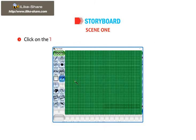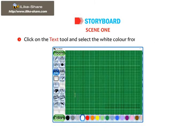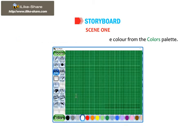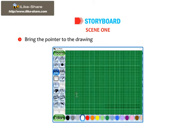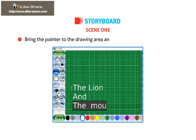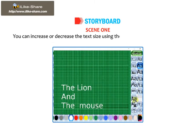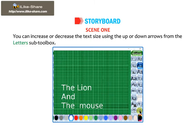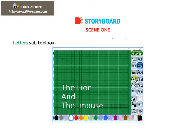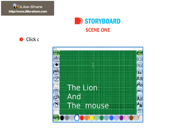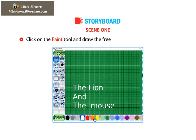Click on the Text tool and select the white color from the Colors palette. Bring the pointer to the drawing area and type the lion and the mouse. You can increase or decrease the text size using the up or down arrows from the letters sub-toolbox.